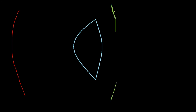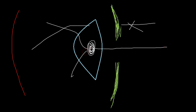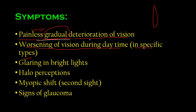During daytime, there is a lot of light, so the pupils constrict. For a patient with nuclear cataract, the light rays that previously entered through the periphery at night can no longer do so — now they must all pass through the damaged nuclear area, scattering every ray and causing bad vision. This worsening of vision in daytime is specific not only to nuclear cataracts but also to posterior subcapsular cataracts, due to pupillary constriction in bright light.